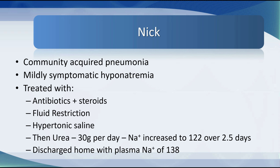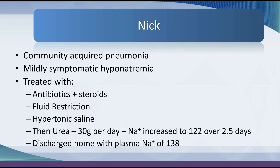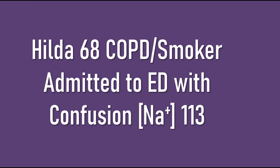Returning to Nick: he had community-acquired pneumonia with mildly symptomatic hyponatremia. He was treated with antibiotics, steroids, fluid restriction, and initially hypertonic saline. He was then started on urea 30 grams per day and his sodium increased to 122 over 2.5 days. He was subsequently discharged with a plasma sodium of 138. We did not simply assume pneumonia-induced SIADH — we imaged him from head to toe and, by discharge, were confident in the diagnosis.